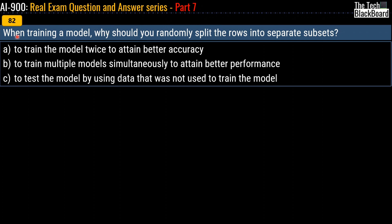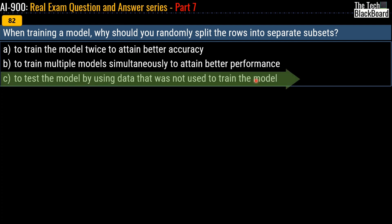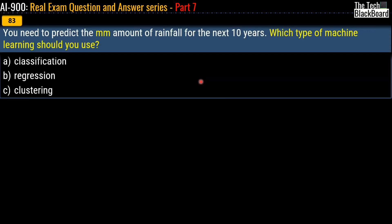Question 82 asks: when training a model, why should you randomly split the rows into separate subsets? Options are: to train the model twice for better accuracy, to train multiple models simultaneously for better performance, or to test the model using data that was not used to train it. The correct answer is option C. You always want some data to test your model against, so you split your data — one portion for training and another for testing.